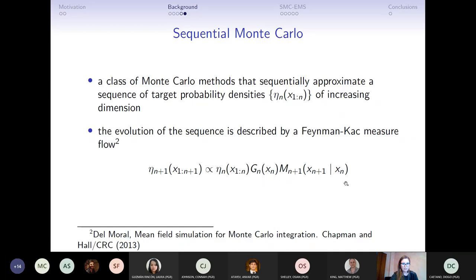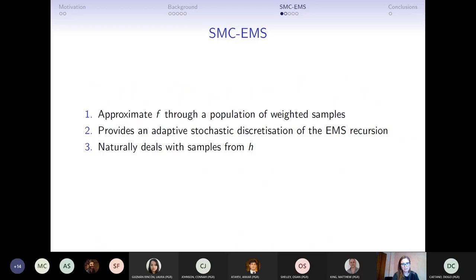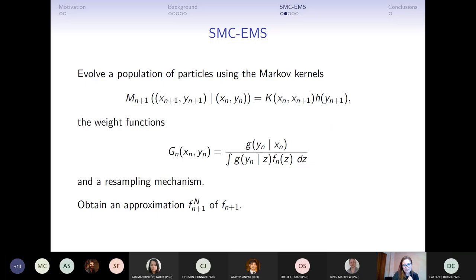So what we did in this project is to combine SMC and EMS. So the idea is that instead of using a deterministic discretization, we use a population of weighted samples in such a way that we can provide a stochastic discretization to the EMS, which is also adaptive. And because it is a Monte Carlo method, we don't have to worry about approximating h, we can directly use samples. So in practice this is quite complicated to make the link between SMC and EMS. But once you look at it long enough and with some very easy tweaks, you can obtain that you can write the EMS recursion in the SMC Feynman-Kac measure form, just by taking the Markov kernel to be this moving times h.